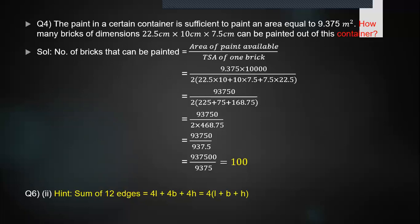Number of bricks that can be painted is going to be the area of the paint available divided by the total surface area of one brick. So you are given the area as 9.375 in the question, and I'm going to convert the units into centimeters. I'm going to multiply the numerator with 10,000 because one meter square equals 10,000 centimeters square. The denominator is the total surface area of one brick. I'm applying the formula for TSA for cuboid over here.